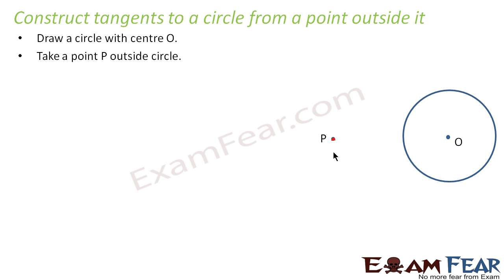The first thing is, take a point P outside the circle, which is already there. So I will name it as P. Join PO, let's join this line PO and bisect it.